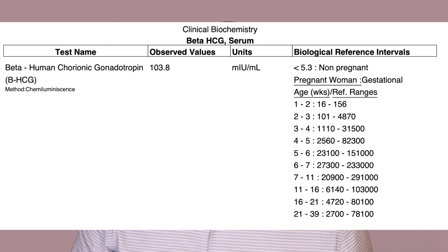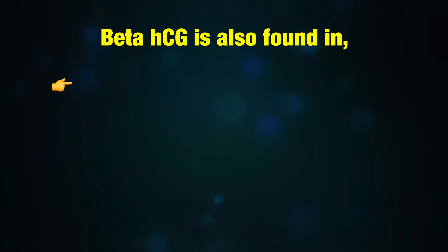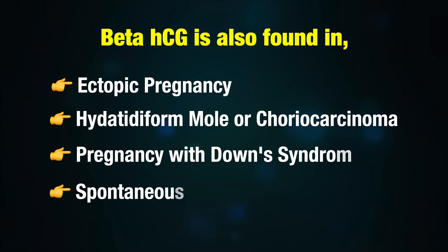In the reference values you can see the weeks of gestation corresponding to the beta HCG level. So what do you infer from a blood report of beta HCG corresponding to a value of three or four weeks of gestation? Do we conclude that the woman is pregnant? No — because beta HCG can be found in many other conditions.